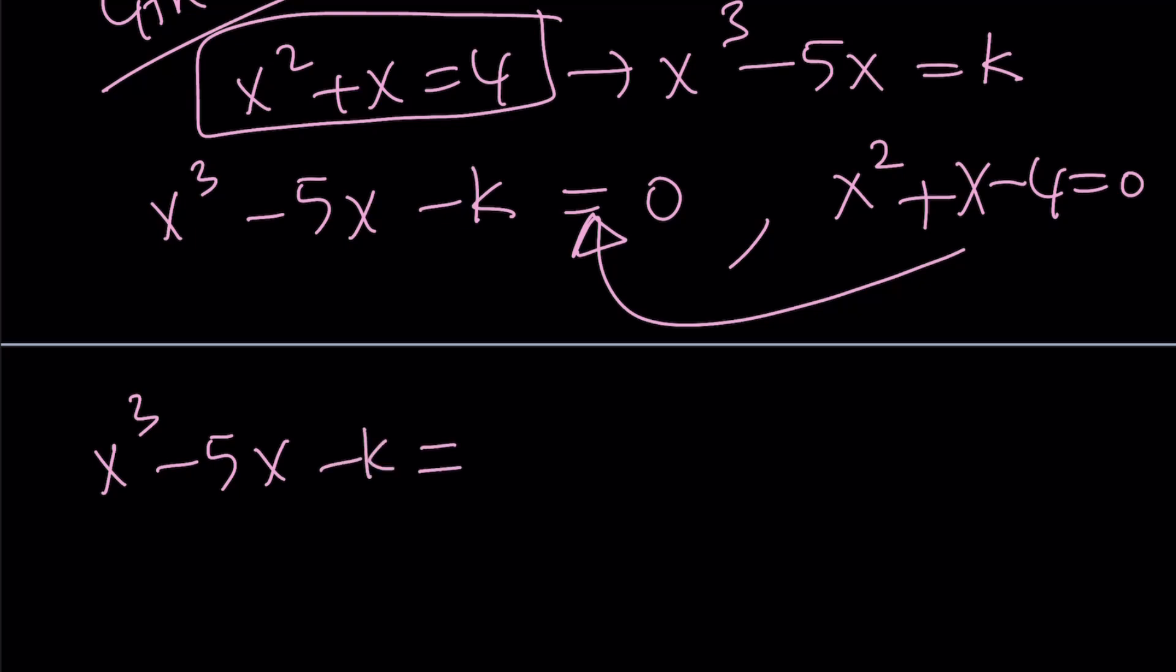So what is that supposed to mean? It means that polynomial-wise, we can write it like this. This quadratic times a linear something, I don't know, maybe m, is going to equal to the cubic. Let's go ahead and distribute x cubed.